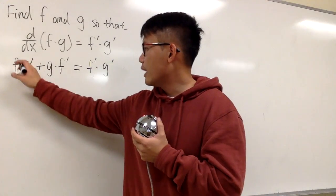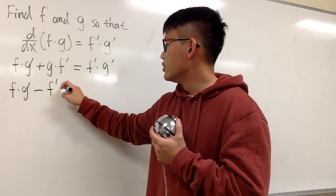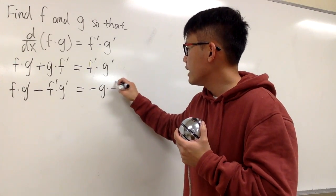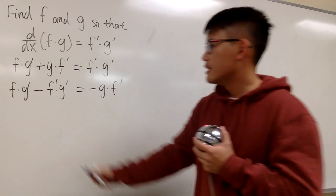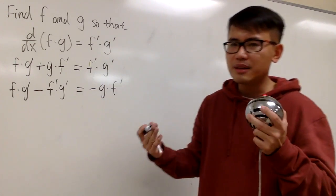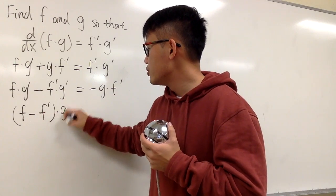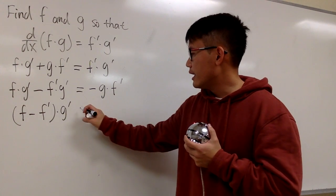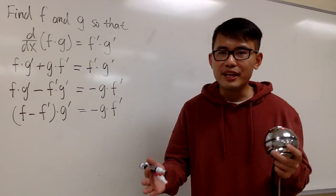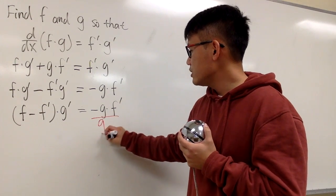I'll move the f prime g prime term to the left hand side, keeping g times f prime on the right. So we have f times g prime minus f prime times g prime on the left, equal to negative g times f prime on the right. I'll factor out g prime — I like to put it at the end to avoid confusion with the prime notation — giving us (f minus f prime) times g prime equals negative g times f prime.